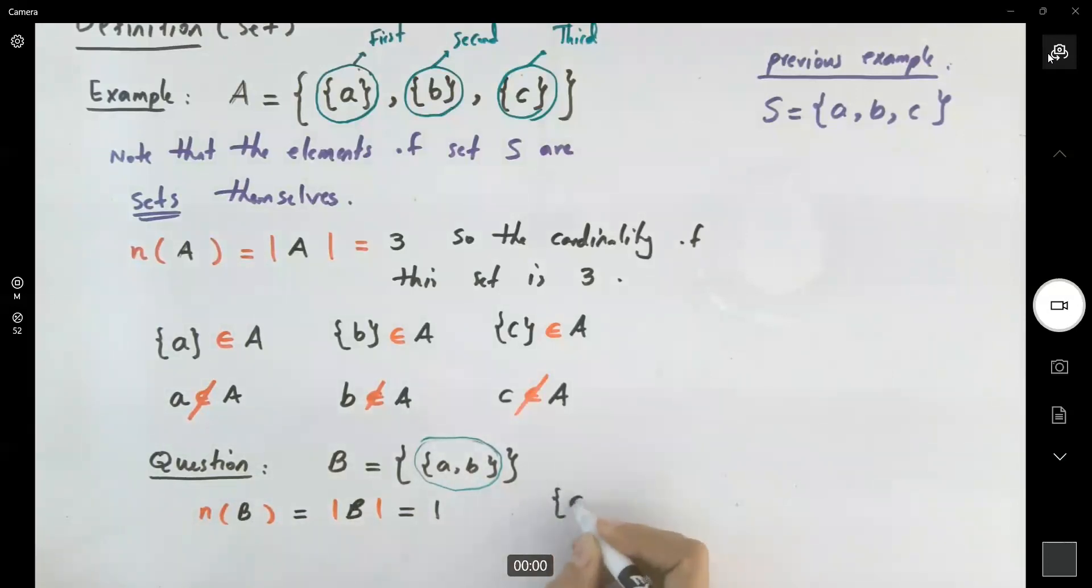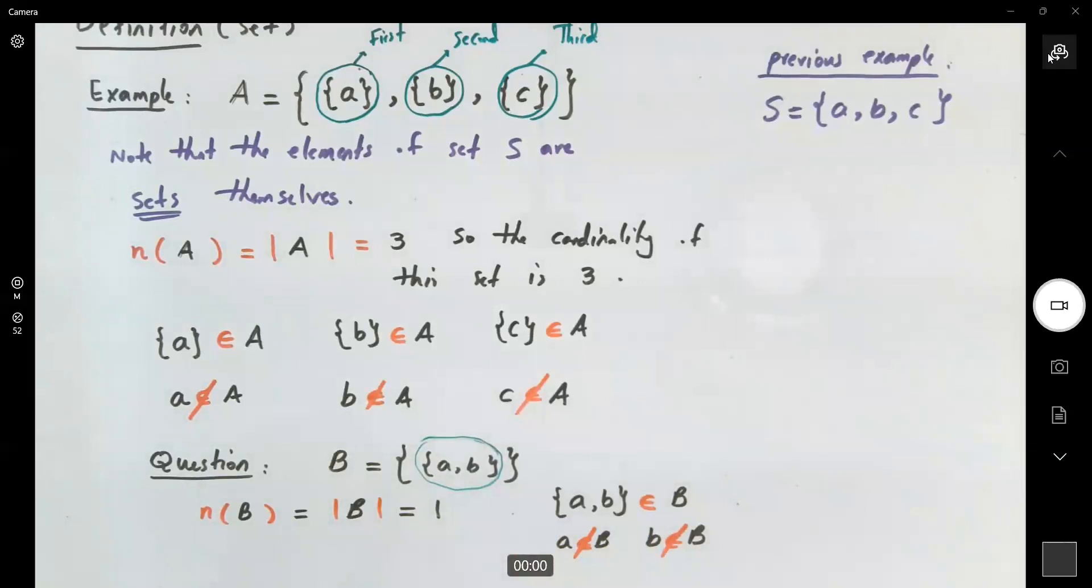So you're going to represent it this way. You're going to say that the set including a and b belongs to set B. Guys, you cannot write a belongs to B. You cannot write b belongs to B. Both of them are wrong. They are not members. A set including a and b is a member of set B.